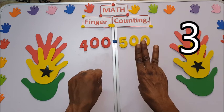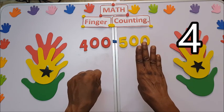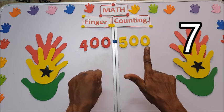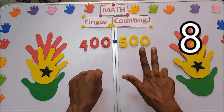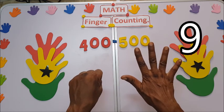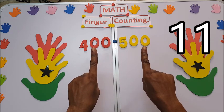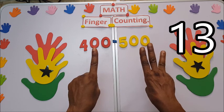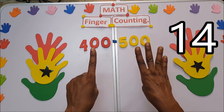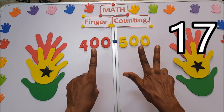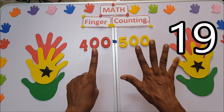Zero, one, two, three, four, five, six, seven, eight, nine, 10, 11, 12, 13, 14, 15, 16, 17, 18, 19.